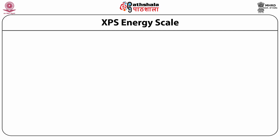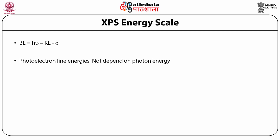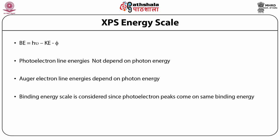Regarding the XPS energy scale: Auger (OJ) electrons are emitted with kinetic energies that depend only on the electronic state of the element responsible for the ejected electron. Photoelectron line energies depend on the photon energy, whereas Auger electron line energies do not depend on the photon energy.